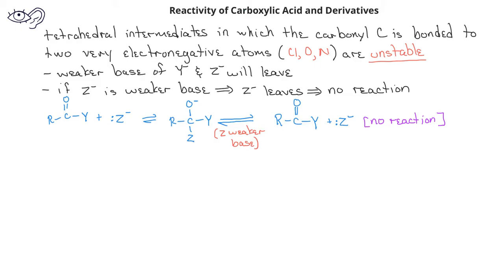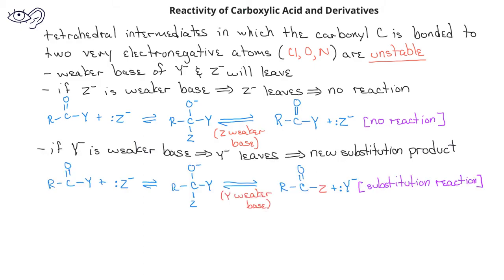However, if the leaving group Y is a weaker base than the nucleophile Z, then we will get a new product. You should recall that in general, the chlorides will be very weak bases and therefore good leaving groups. The alkoxides or hydroxides will be intermediate in their ability to act as leaving groups, whereas the amide ions, NH2-, will be strong bases and therefore poor leaving groups.